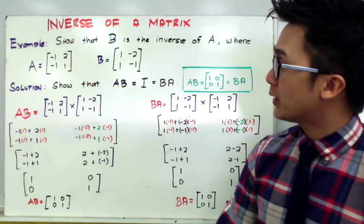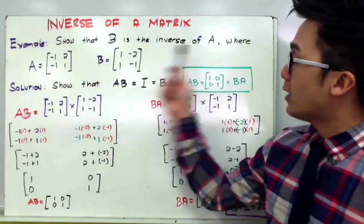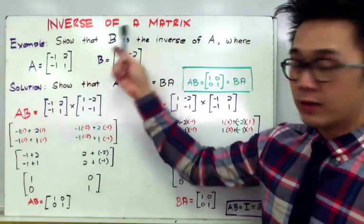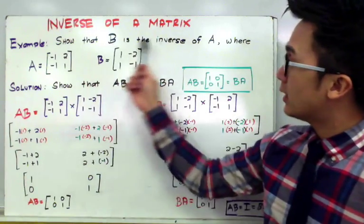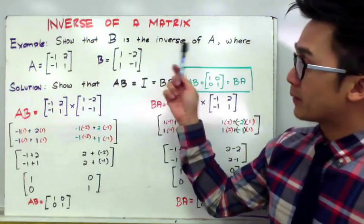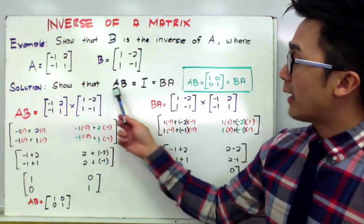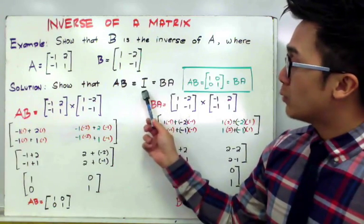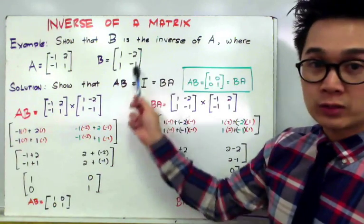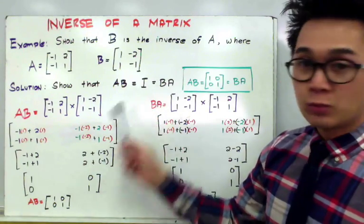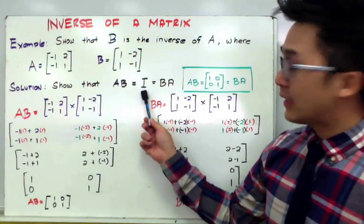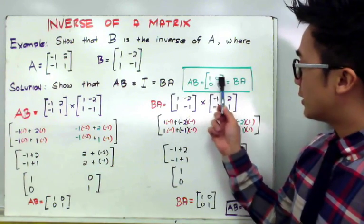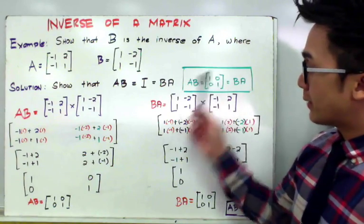For this first example, we need to show that B is the inverse of A when A is equal to this matrix and B is equal to this matrix. To prove this in linear algebra, we need to show that A times B is equal to the identity matrix, and B times A is also equal to the identity matrix. The identity matrix looks like this: 1, 0, 0, and 1.